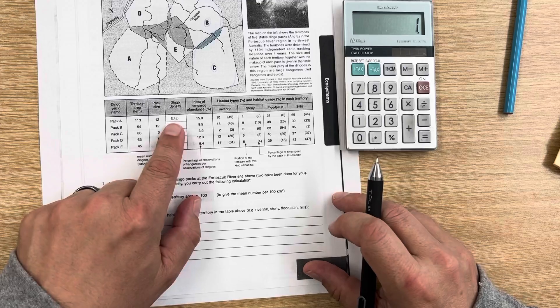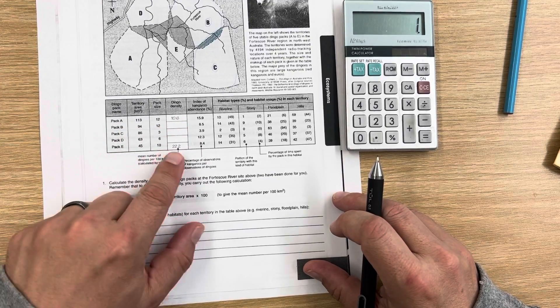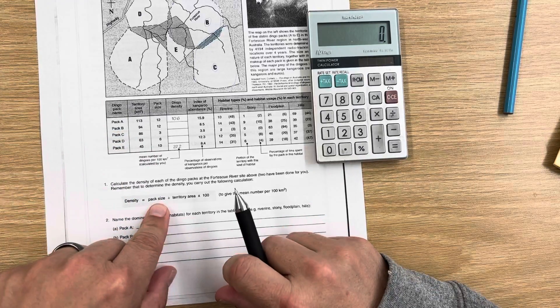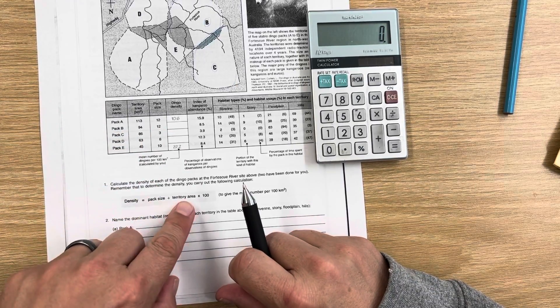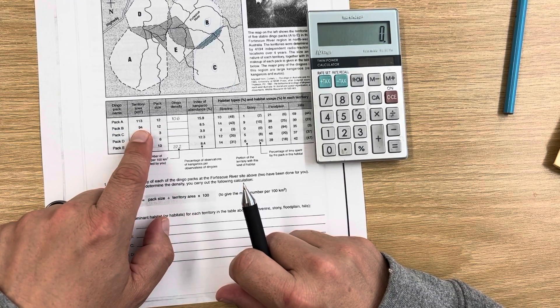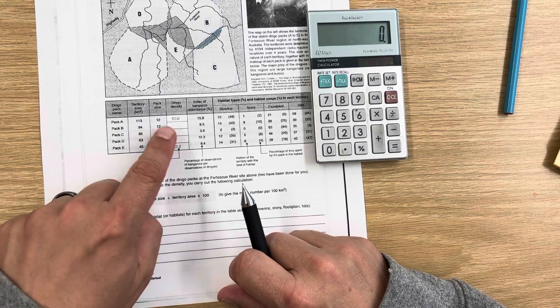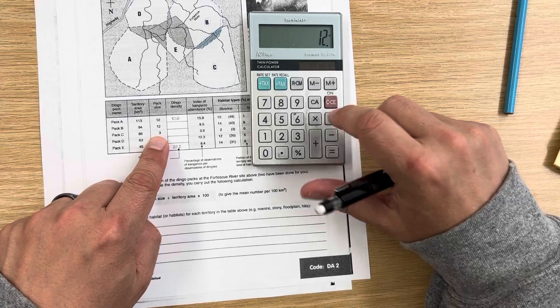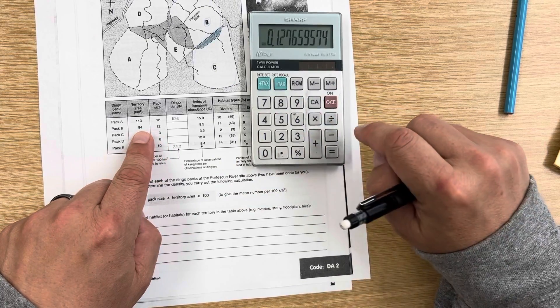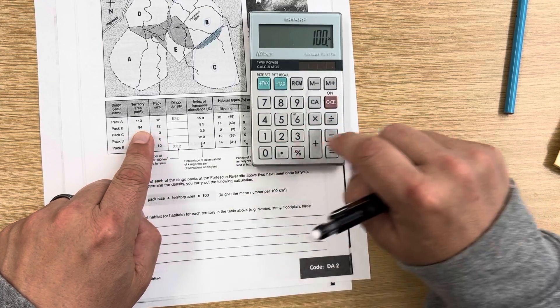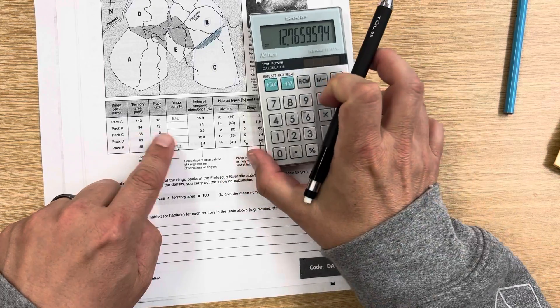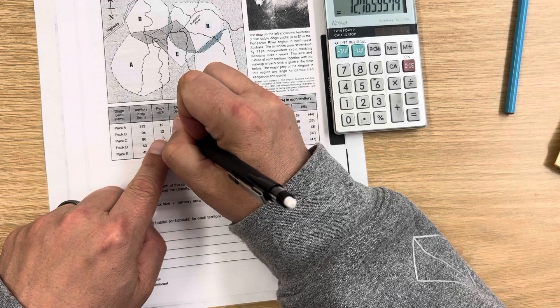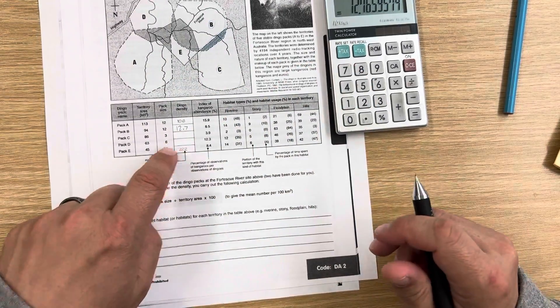It's already showing you pack A and pack E. Let's do pack B together. It says you take the pack size, which is 12, divided by the territory, which is 94, and multiply it by 100. So I'm going to do that right here: 12 divided by 94 equals, times 100, 12.7, or 12.8 if you want to round it. And you're going to do that for the other two here.